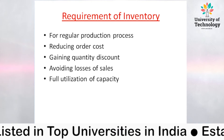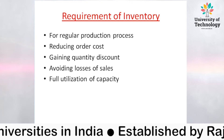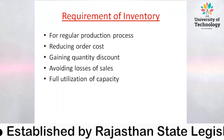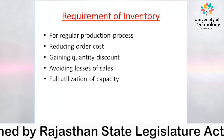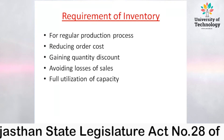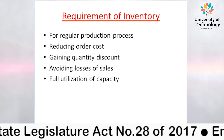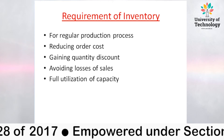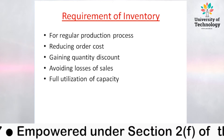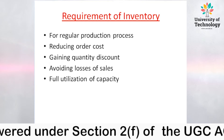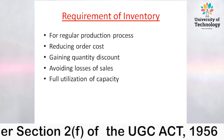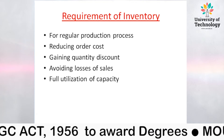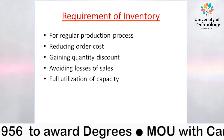The second requirement is reducing order cost. Every time a firm places an order, it includes certain costs. For example, when goods arrive in the business, they must be accepted, inspected, and counted — all of this involves cost.